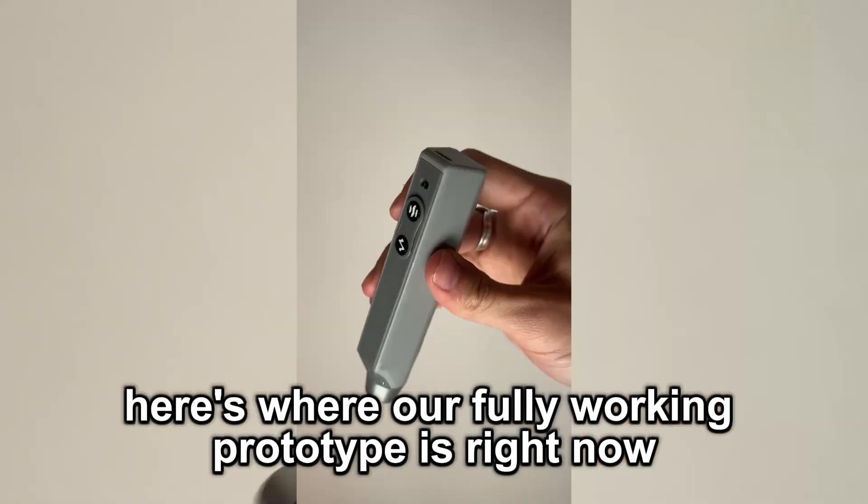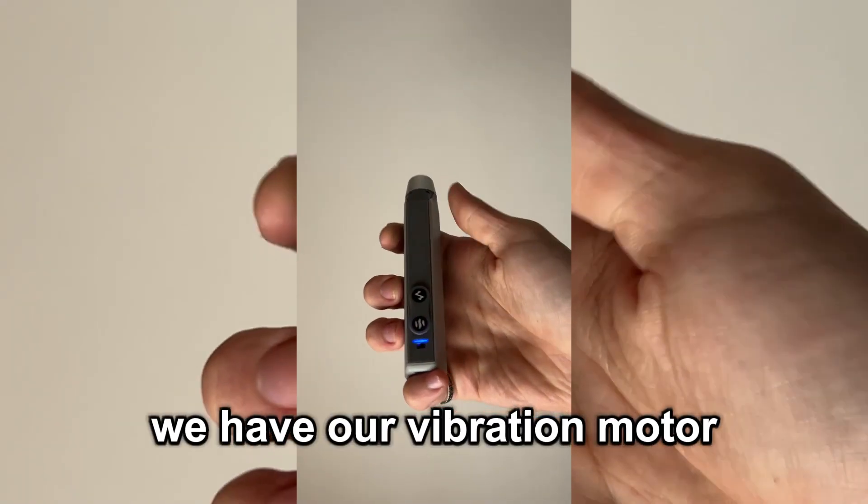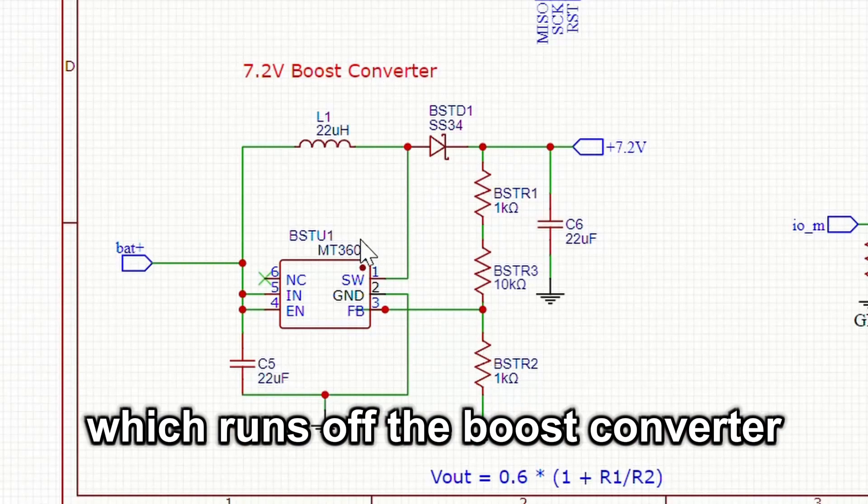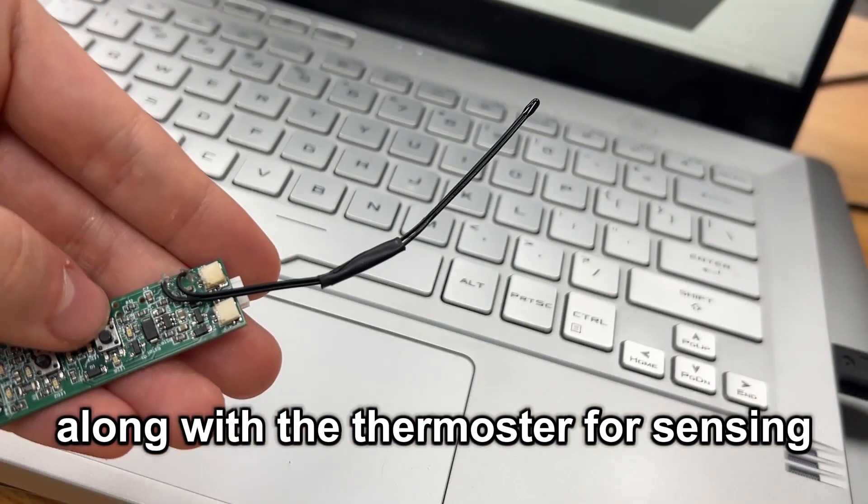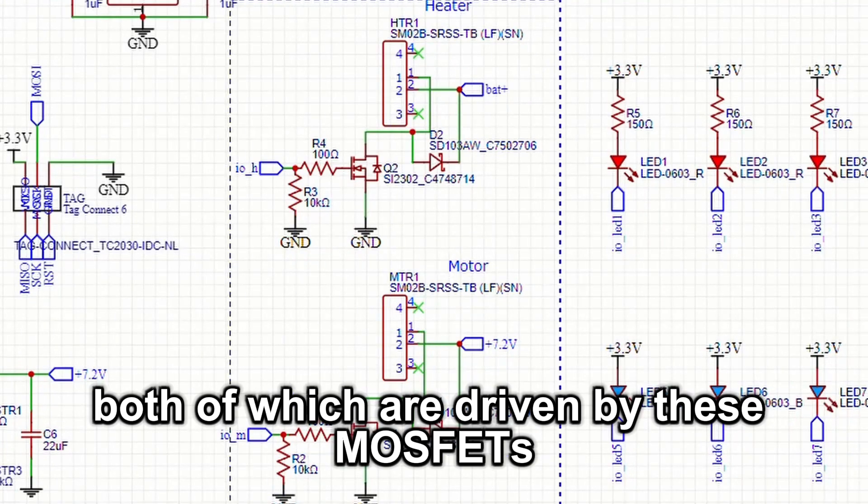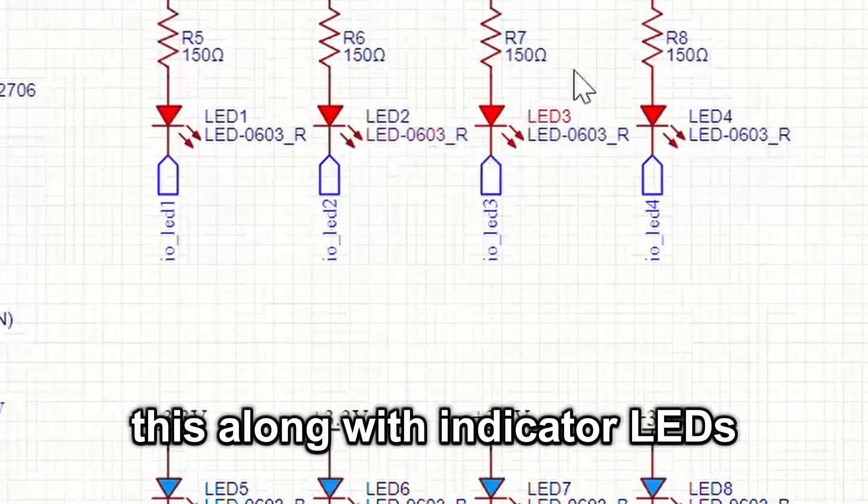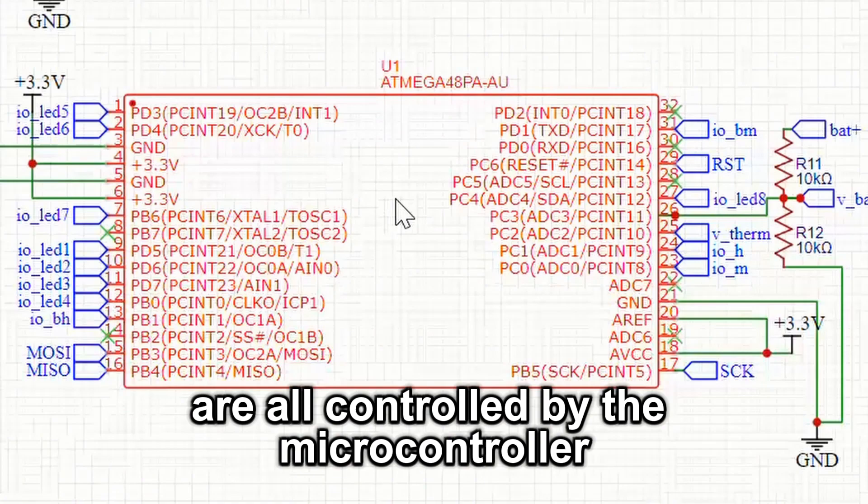Here's where our fully working prototype is right now. We have our vibration motor, which runs off the boost converter. We have our heating element, powered by the battery along with the thermistor for sensing. Both of which are driven by these MOSFETs. This, along with indicator LEDs, are all controlled by the microcontroller.